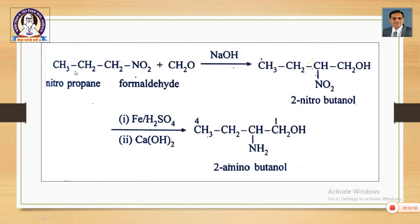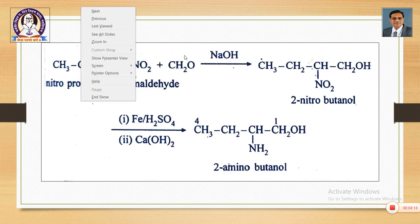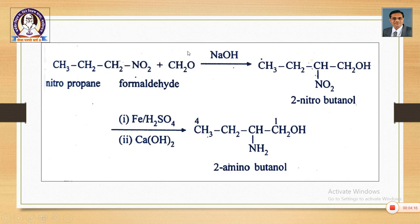So we begin with nitropropane — one, two, three carbons — propane with a nitro group. Nitropropane plus formaldehyde: formaldehyde has the formula HCHO, written as CH₂O. Formaldehyde reacts with nitropropane in an alkaline medium and we get CH₃–CH₂–CH(NO₂)–CH₂OH, which is 2-nitrobutanol.